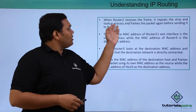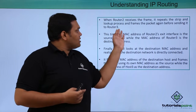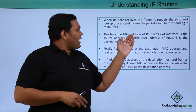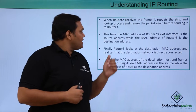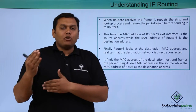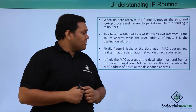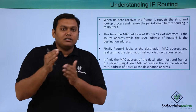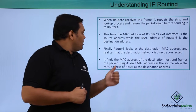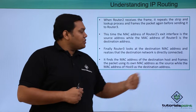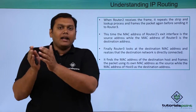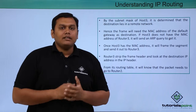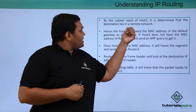When Router 2 receives the frame, it repeats the same process and re-frames the packet before forwarding it to the next router. This time, the MAC address of Router 2 is the exit interface and is the source address, while the MAC address of Router 3 is the destination address. Finally, Router 3 looks at the destination MAC address, realizes the destination network to which the packet has to be forwarded, finds the MAC address of the destination host, frames the packet, and forwards it to the destination IP address. By the subnet mask of Host 3, it is determined that the destination lies in the remote network.